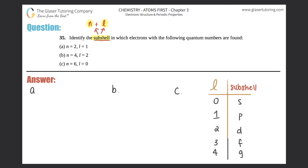Remember what the l tells you: l always tells you the shape. Instead of saying circular, round, square, or triangle, they give it to you in terms of letters, but it's always just talking about the shape. So the s subshell (l = 0) will have a different shape than a p subshell (l = 1), and so on.